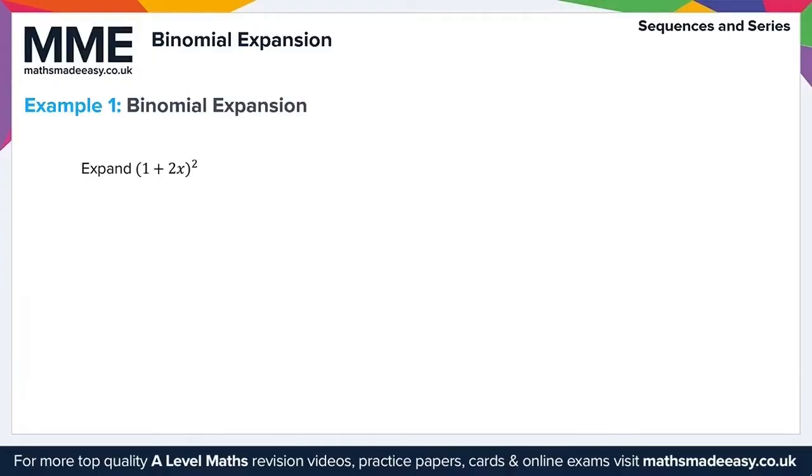Example 1 here on the binomial expansion is just taking a look at using the binomial expansion. So here we're asked to expand (1 + 2x)². Now clearly this would just be two brackets that you could expand using a method such as FOIL or the CLAW method, however here what we want to do is use the binomial expansion to show how we would expand this.